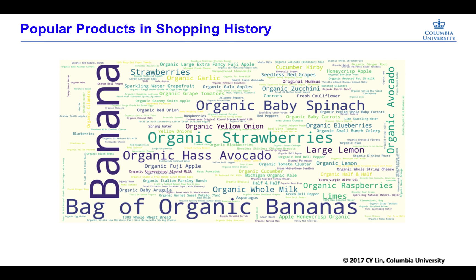Here are some popular products in shopping history. We made a word cloud and we can see the number one popular product is banana. An interesting thing is the bag of organic banana is the second popular product. If you are running business in grocery or supermarket, don't forget to put banana on your shelf. We think it can boost your sales.